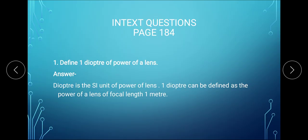Diopter is the SI unit of power of a lens. Therefore, one diopter can be defined as the power of a lens whose focal length is 1 meter.